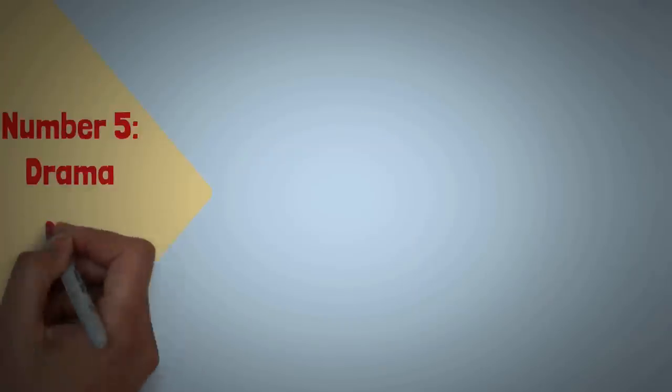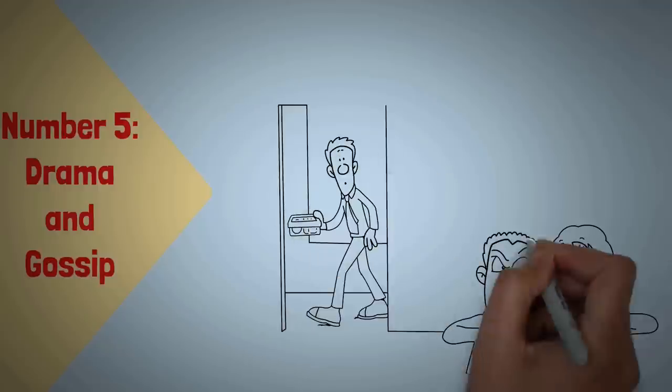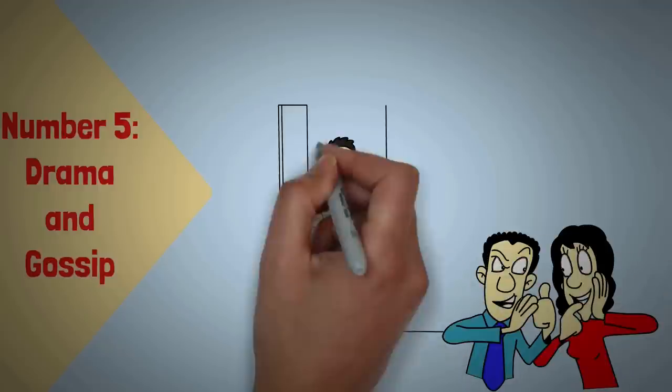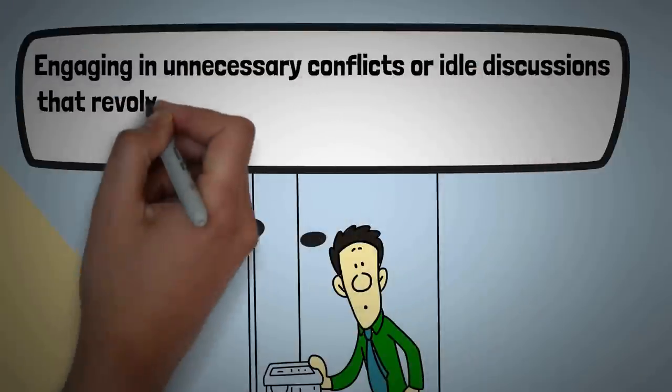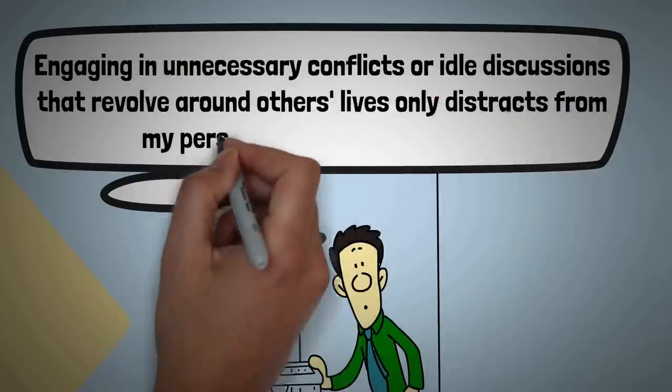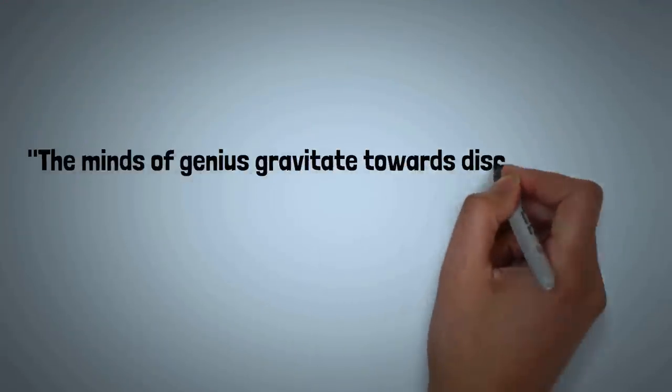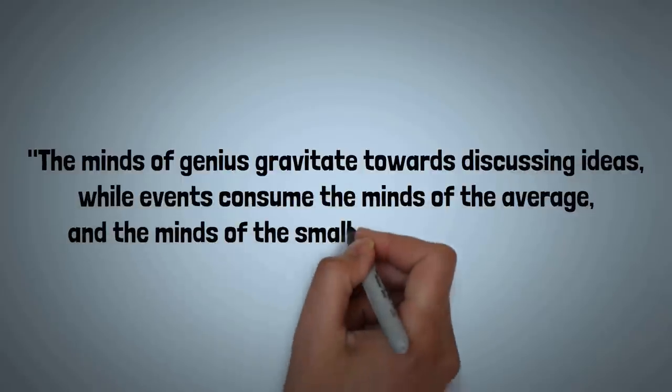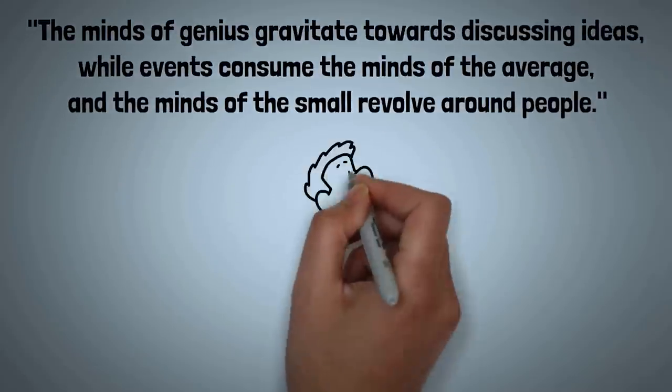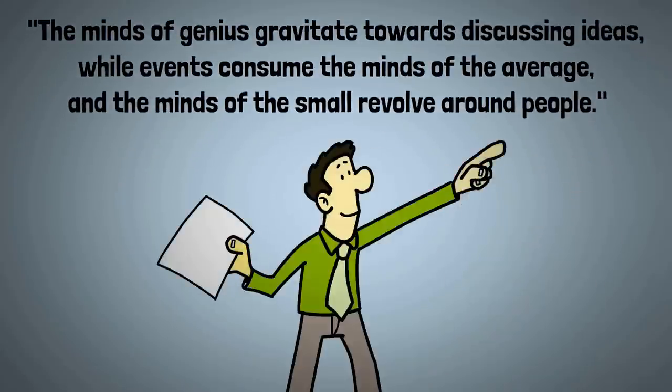Number 5: Drama and Gossip. Drama and gossip hold no allure for Sigma males who consciously avoid these detrimental behaviors. They recognize that engaging in unnecessary conflicts or idle discussions that revolve around others' lives only distracts from their personal growth and pursuits. They abide by the wisdom: The minds of genius gravitate towards discussing ideas while events consume the minds of the average and the minds of the small revolve around people. This adage reinforces their belief in the power of intellectual discourse.